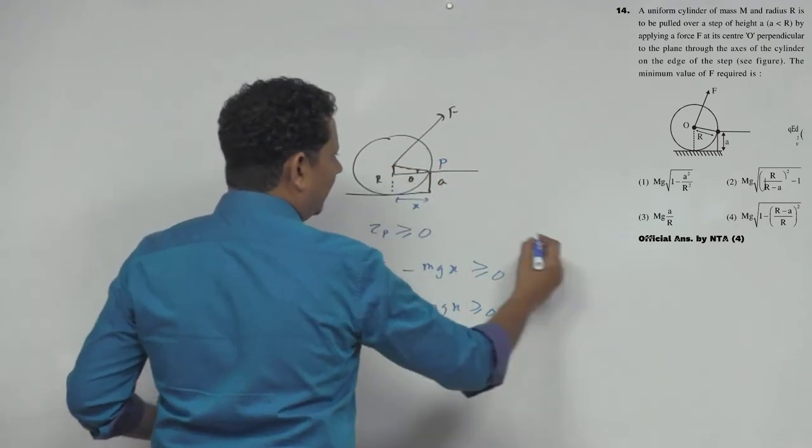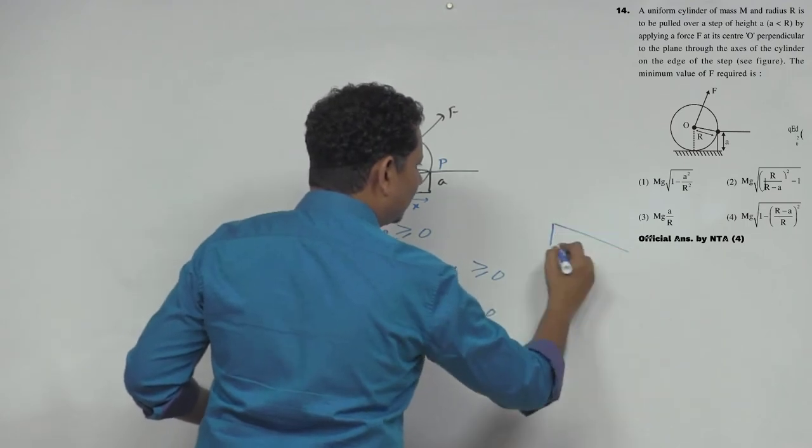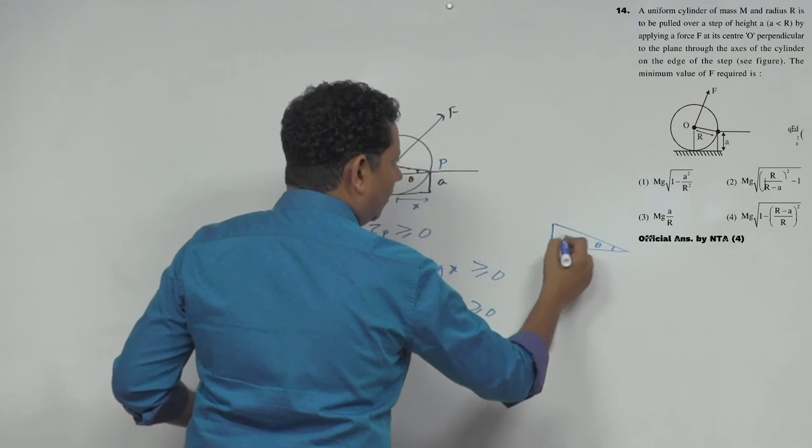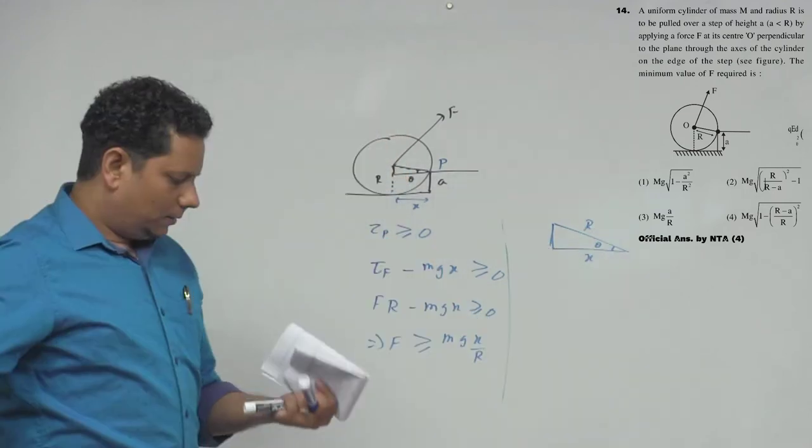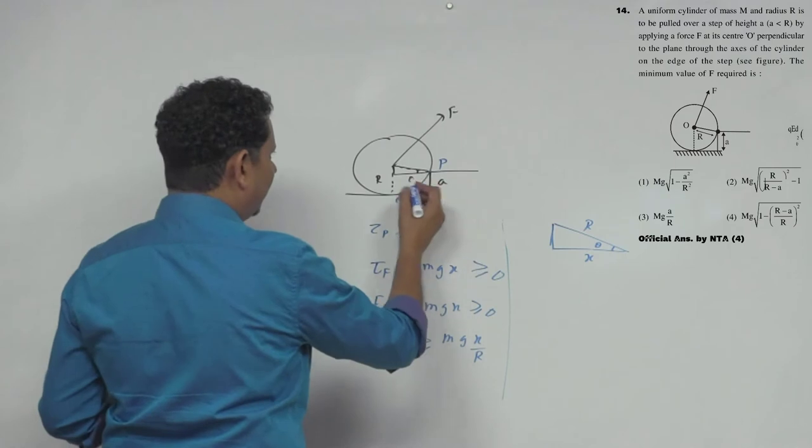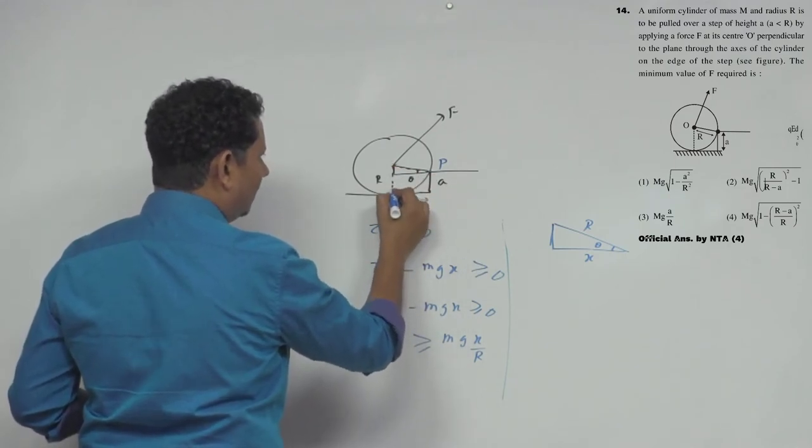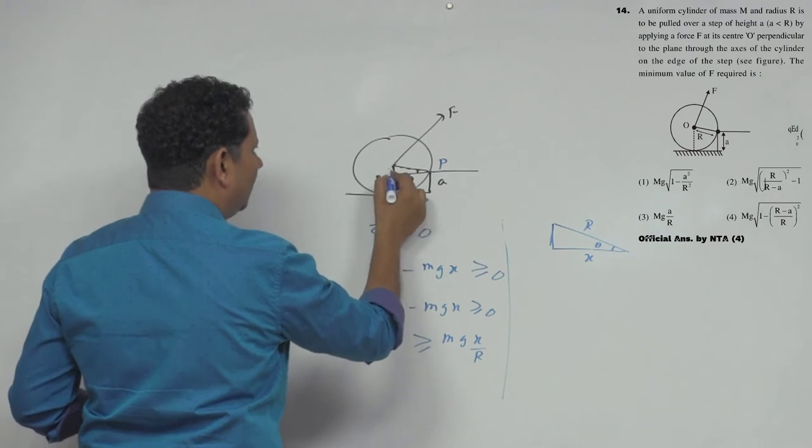If we notice this triangle, we can say that this angle is theta, this is radius r, this is x. And notice that this radius is r and this side is a.